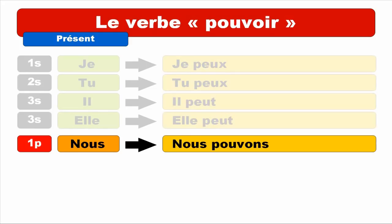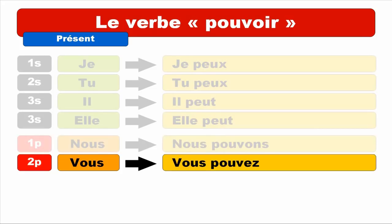For VOUS it's a little bit the same — VOUS POUVEZ. You keep this P-O-U-V but then put the ending for VOUS, which is EZ. VOUS POUVEZ. Repeat. VOUS POUVEZ. For ILS au pluriel — ILS PEUVENT. Repeat. ILS PEUVENT.